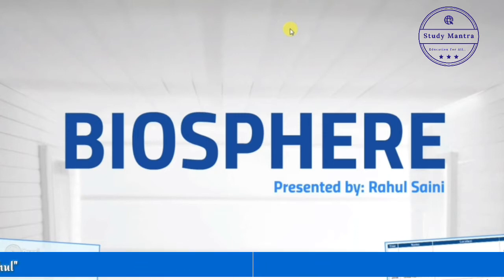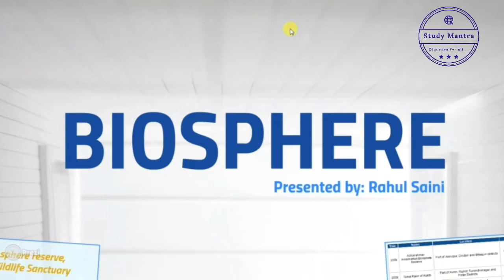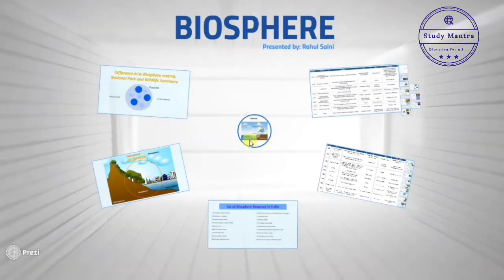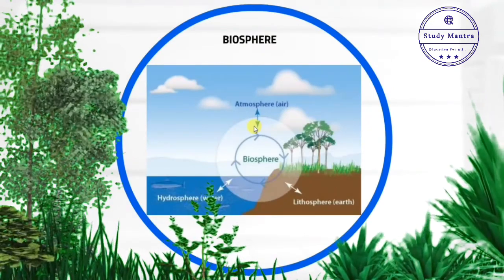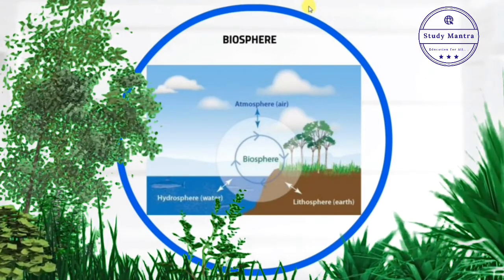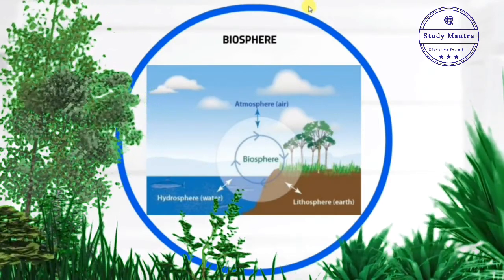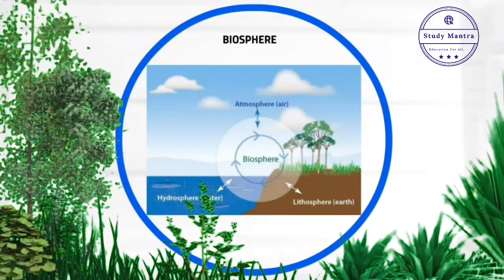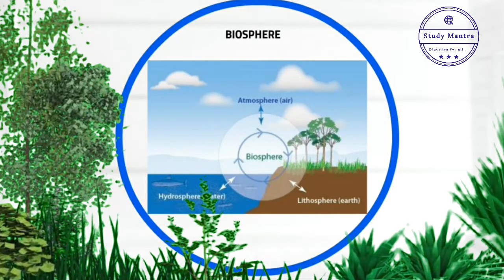First we will see on the map where all biospheres are located, and at the end through a matrix we will see how to easily remember all these things. Watch this video till the end so everything is well understood. Let's start without wasting time. What is a biosphere? A biosphere is a very large area of biodiversity where flora and fauna are protected. In terms of meaning, it is a combination of land, water, and atmosphere where all living organisms interact.